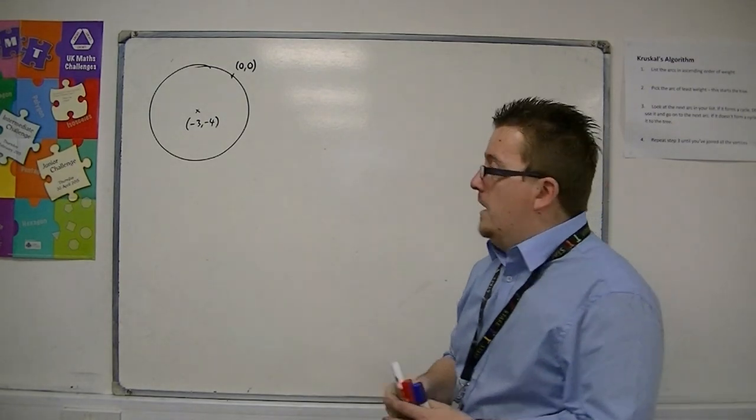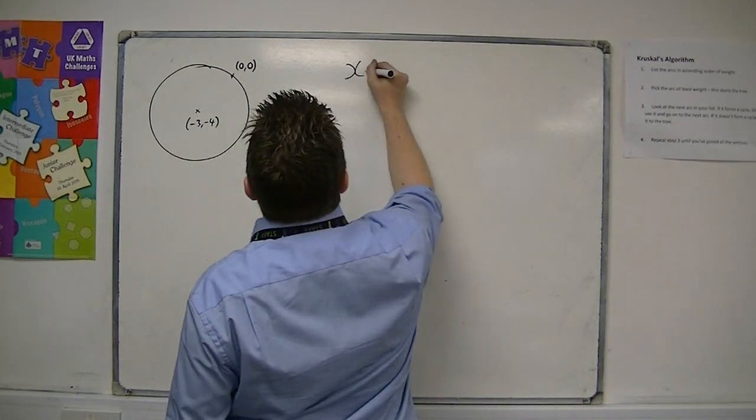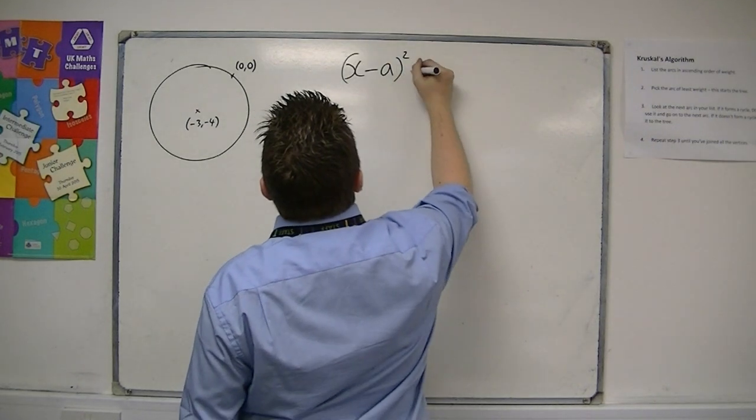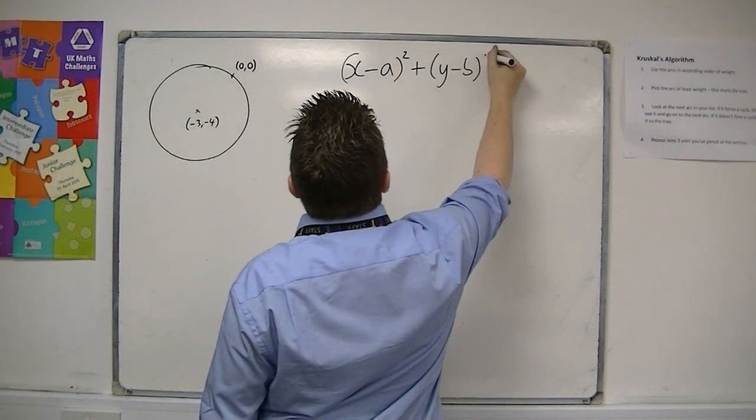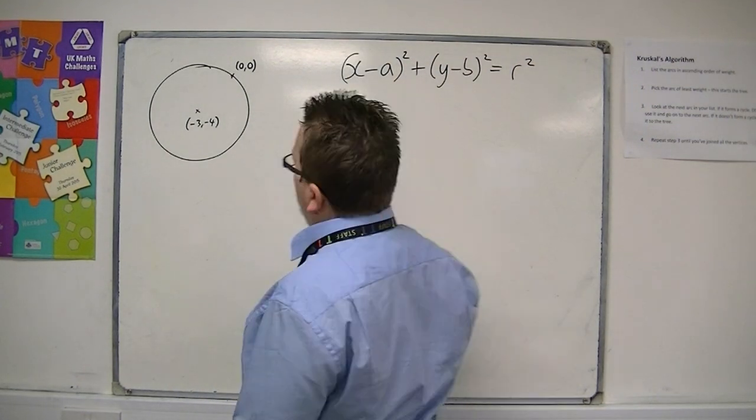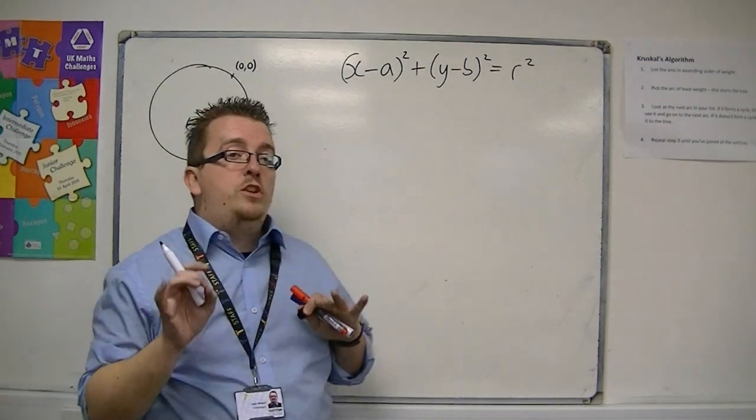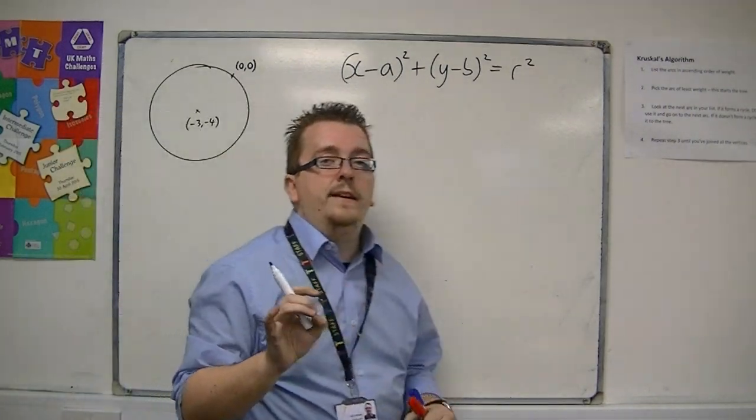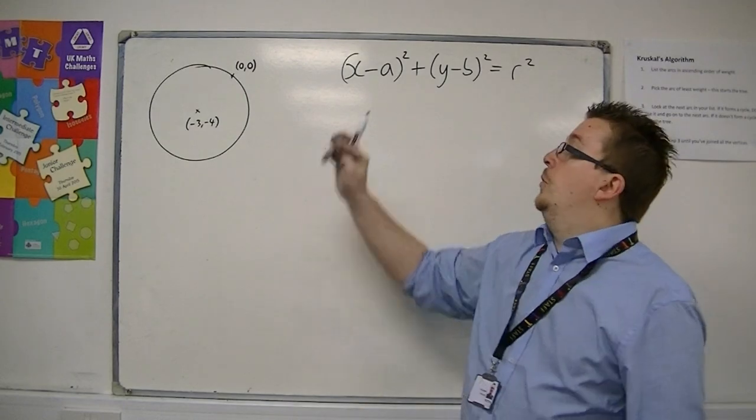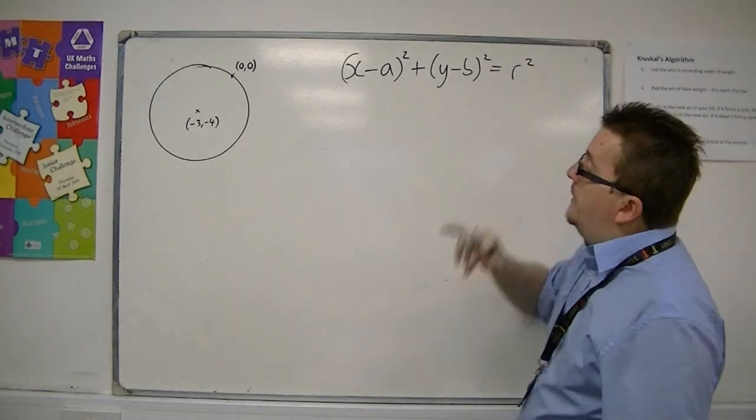So we know that the equation of the circle is x minus a squared plus y minus b squared is equal to r squared. So the information you need to be able to find is the center, the coordinates of the center, and the length of the radius.